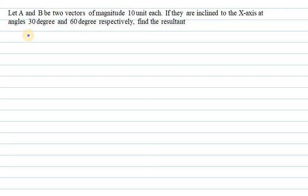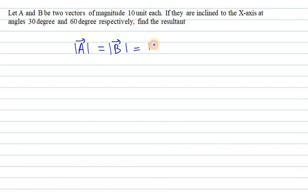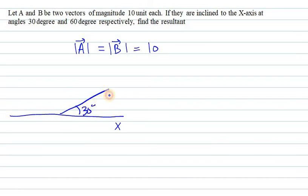Let's start with the second question of physics and mathematics. Let A and B be two vectors of magnitude 10 units each. Vector A is 10 and B is 10. They are inclined to the x-axis at angles 30 degrees and 60 degrees respectively. We need to find the resultant, so let's make a simple diagram: this is X, A is at 30 degrees, and B makes 60 degrees.